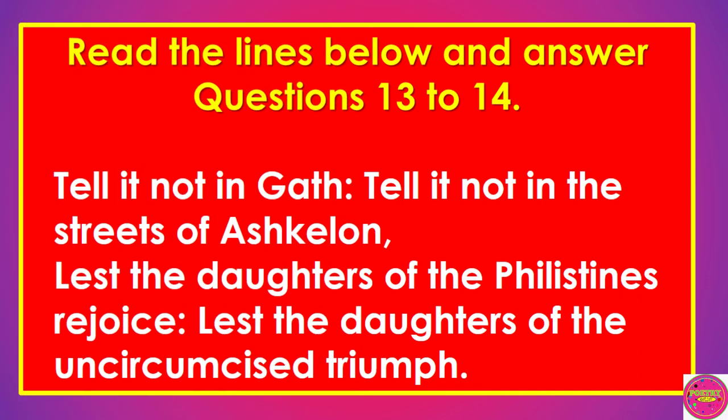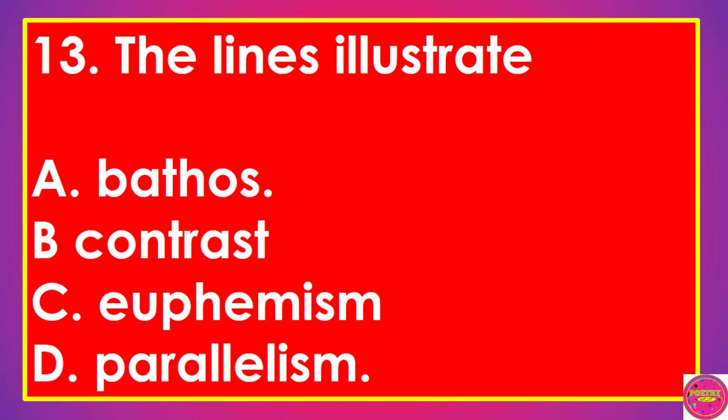Read the lines below and answer questions 13 to 14: 'Tell it not in Gath, tell it not in the streets of Ashkelon, lest the daughters of the Philistines rejoice, lest the daughters of the uncircumcised triumph.' Question 13: The lines illustrate: A. Bathos, B. Contrast, C. Euphemism, D. Parallelism. The correct answer to this question is D. Parallelism.